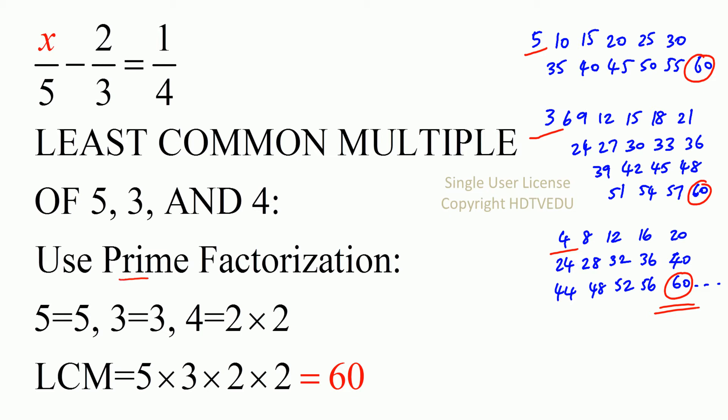Or use prime factorization. How do we use prime factorization? 5 is a prime number, so there's nothing we can do. 3 is already prime. Nothing we can do. How about 4? 4 is 2 times 2. 2 is a prime number, right?